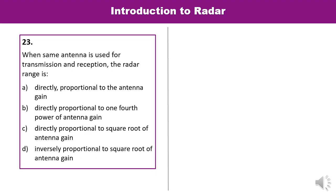Question 23: When the same antenna is used for transmission and reception, the radar range is directly proportional to what function of the antenna gain? Recalling the radar range equation: R raised to the power 4 is directly proportional to G² (gain of the antenna squared). It means when the same antenna is used, radar range is directly proportional to the square root of the antenna gain. That is the correct answer.